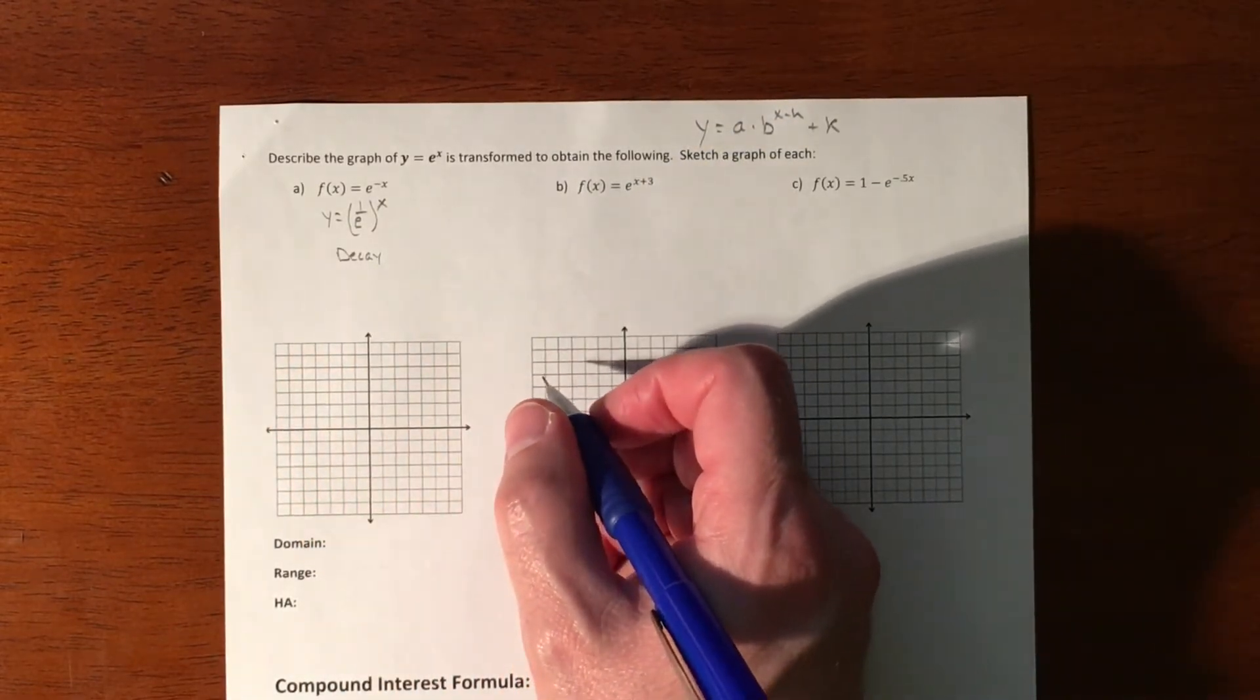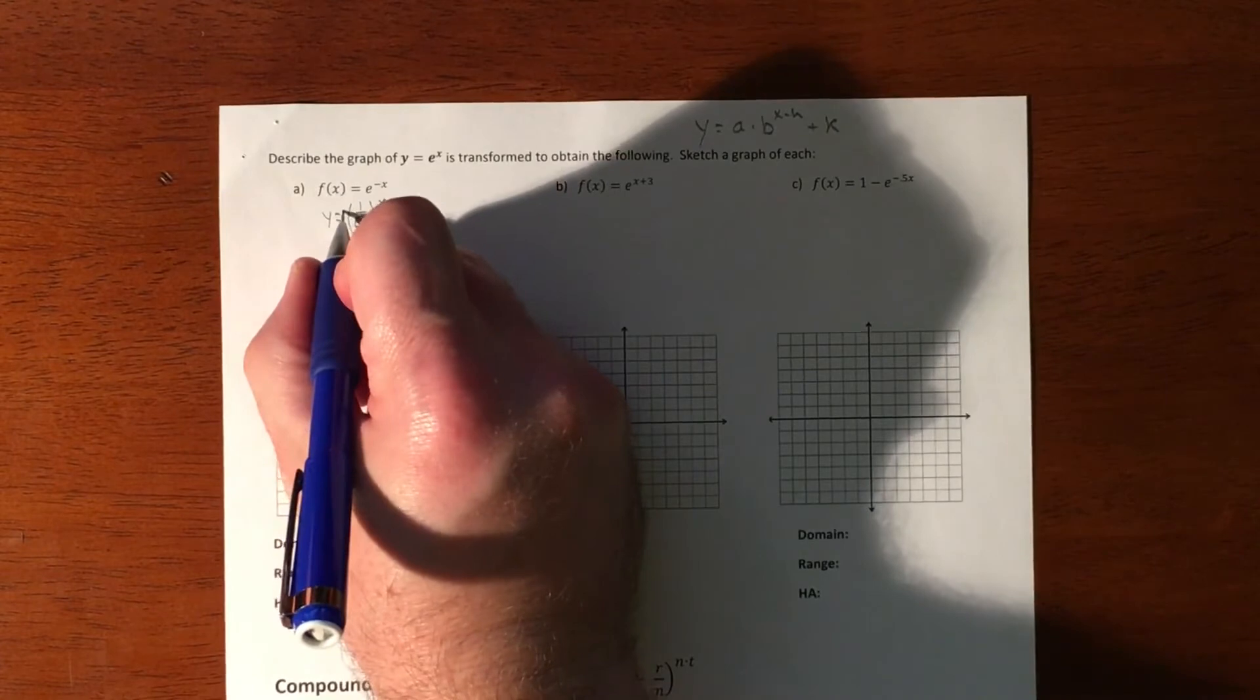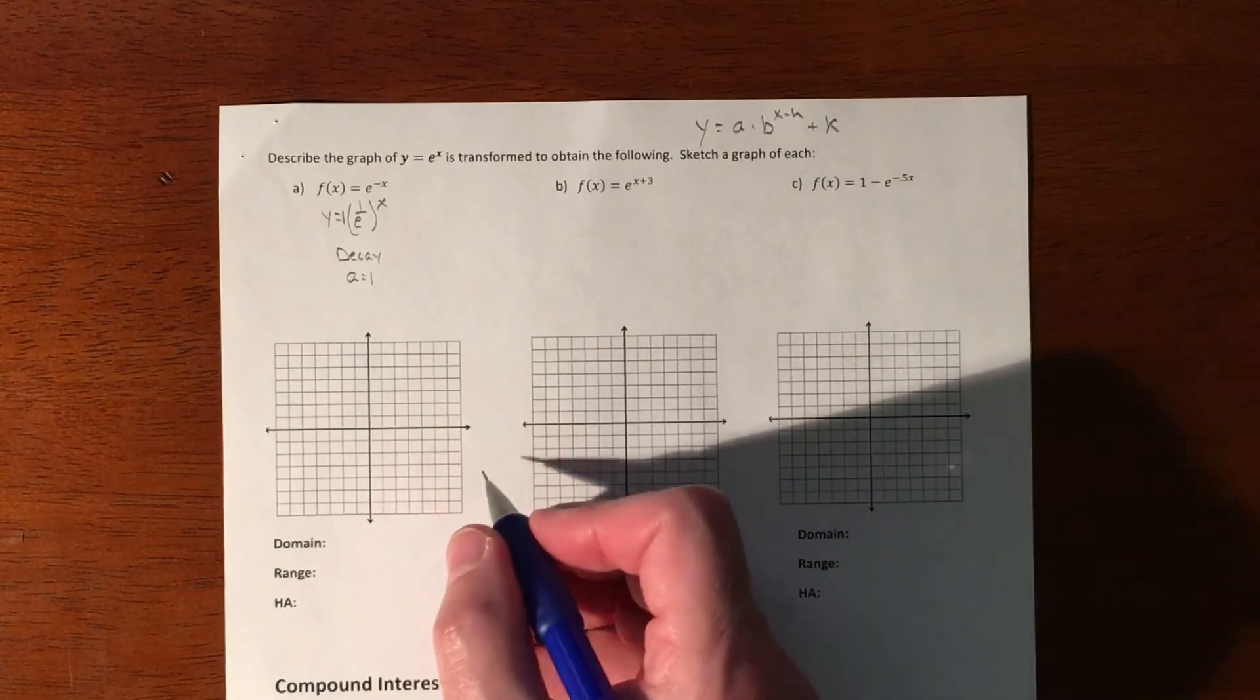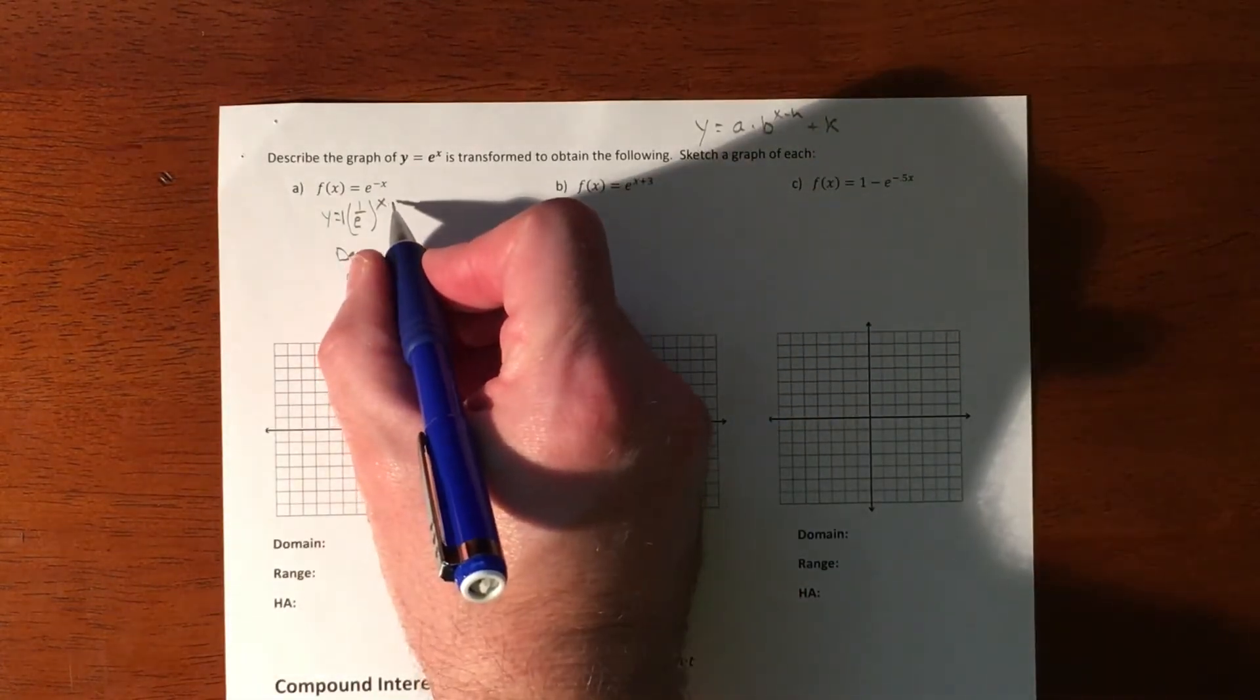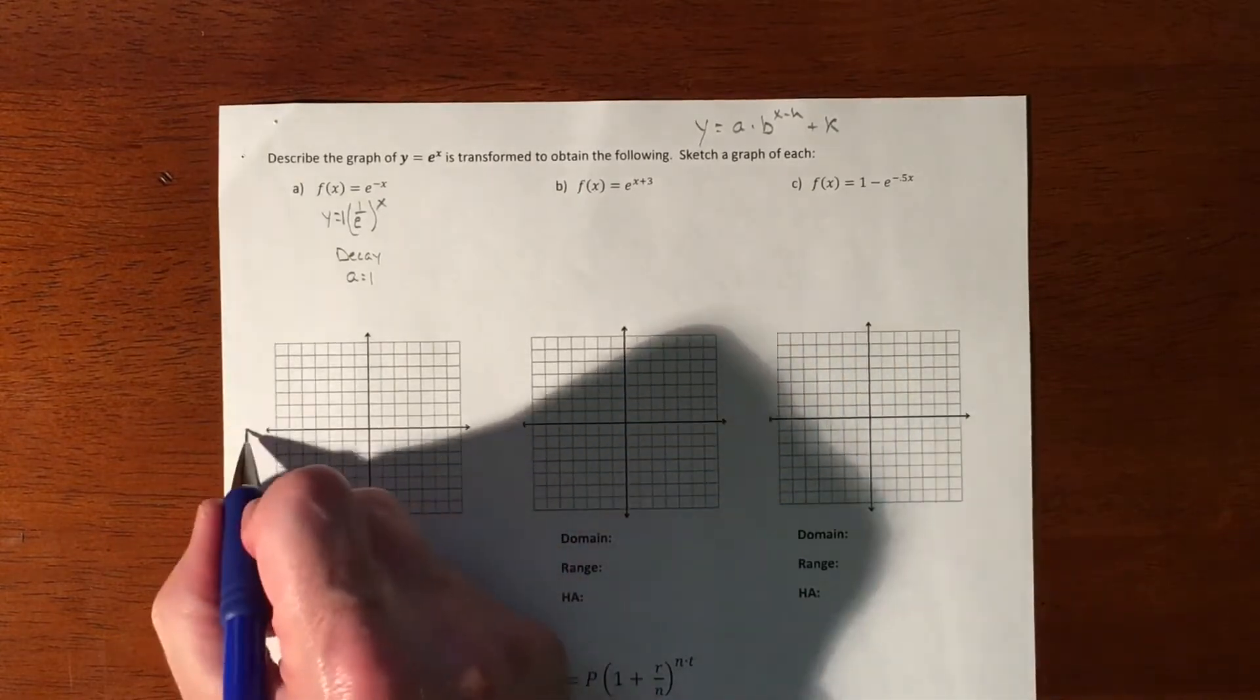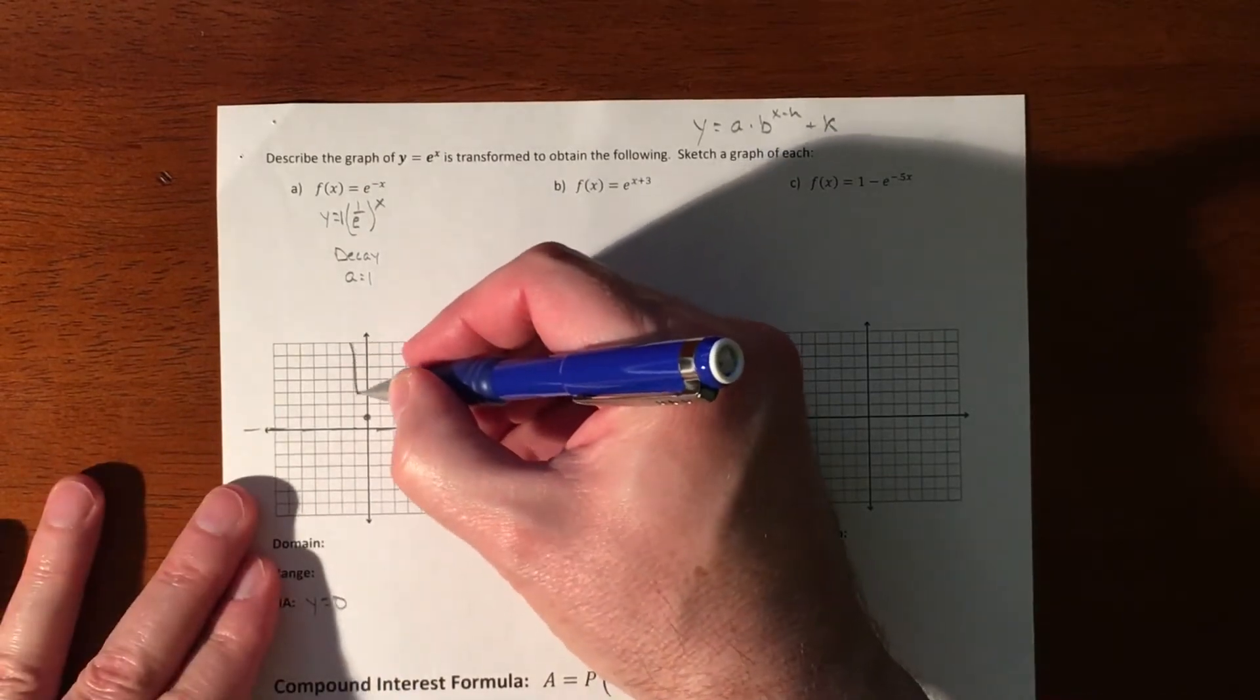So we do not have any kind of a horizontal shift or anything like that. So our A value is 1, which is our 1 right in front of this. All exponentials have that. And then we don't have any left or right shift. We don't have any up and down shift. We don't have any reflections anymore. We just have a decay. So our horizontal asymptote is y equals 0. We have a 0, 1, and we just have a decay.